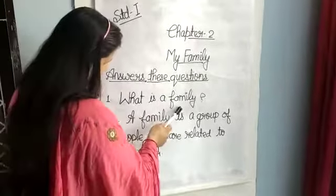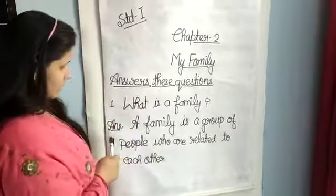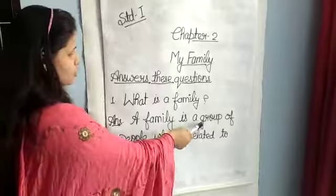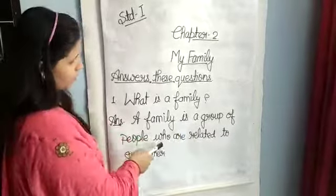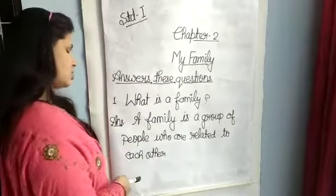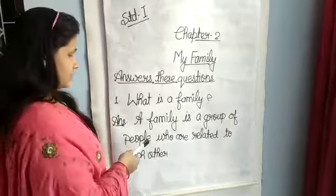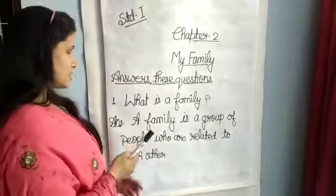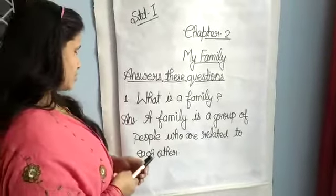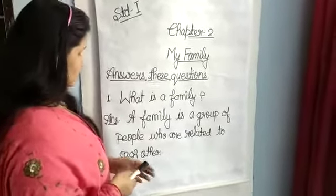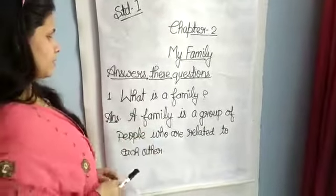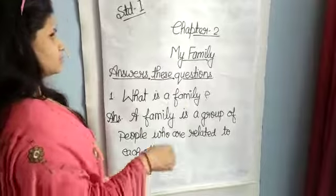First question: What is the family? The answer is: A family is a group of people who are related to each other. So we call this a family.